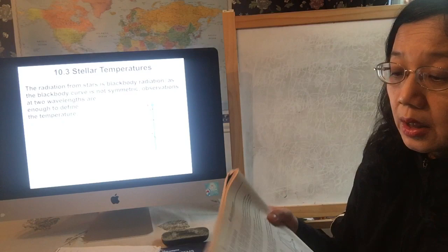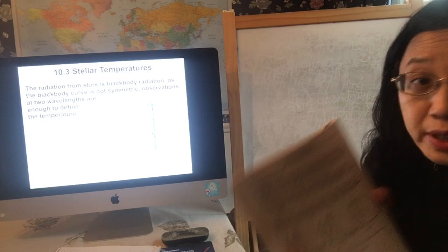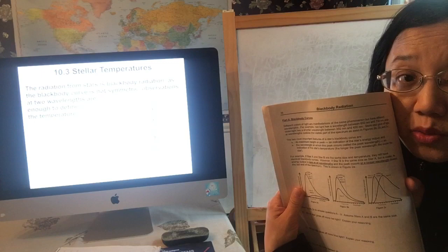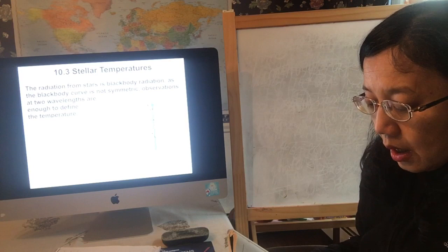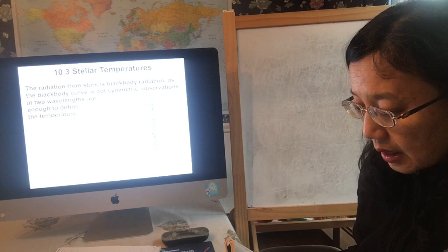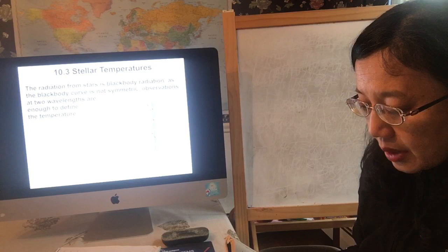The thing I want to spend more time on is the second page, part two. I'm going to read this and explain what it means, and then you can follow the instructions to do the exercise. For this tutorial: different colors of light are many manifestations of the same phenomena but have different wavelengths.